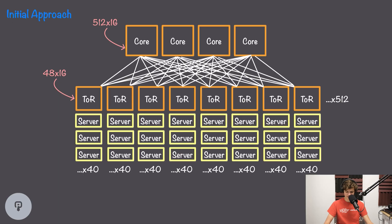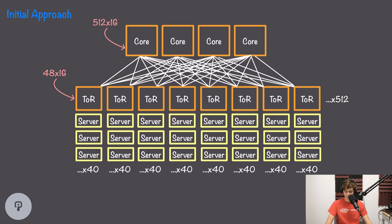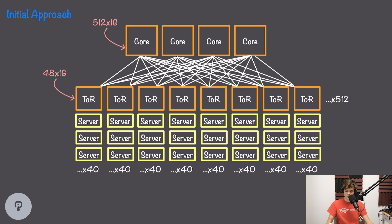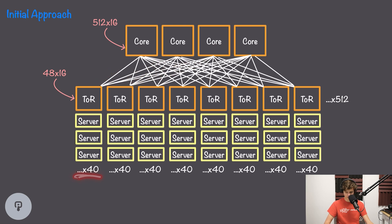This architecture was limited by the size of the core switches. The largest switches available at the time were 512-port one-gigabit switches, meaning we could only have 512 server racks in our cluster. With four core switches, we have four gigabits of bandwidth for each rack. Each top-of-rack switch was a 48-port one-gigabit switch — four ports connected to the core switches and 40 ports connected to servers.